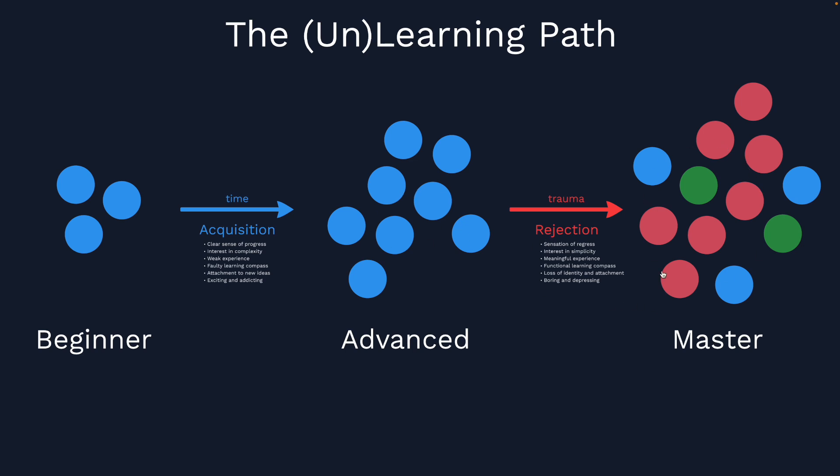This is why a master sometimes may produce code that looks like it was written by a beginner. Because it's so simple that a beginner may have written it. And that is a sign that after all this process, you may have acquired mastery. This is precisely why I think that the meme format of the midwit works so well.